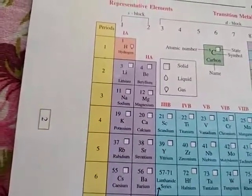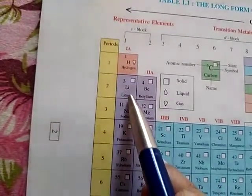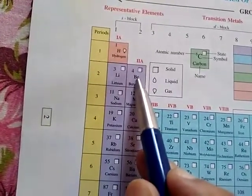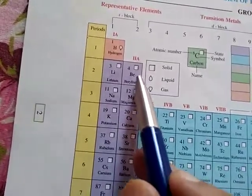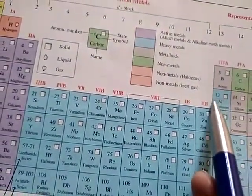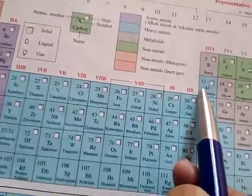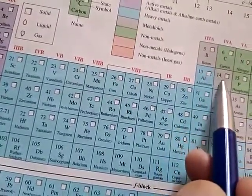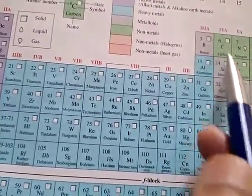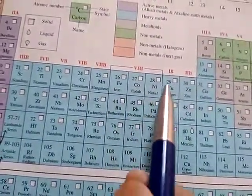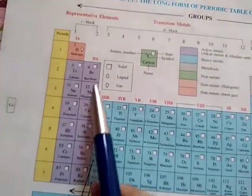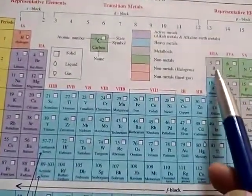Lithium and magnesium have a diagonal relationship. Beryllium and aluminum also have a diagonal relationship. Boron has a diagonal relationship with silicon. However, this diagonal relationship does not mean that every element will show it — it is not necessary. The examples for diagonal relationship are: lithium with magnesium, beryllium with aluminum, and boron with silicon.